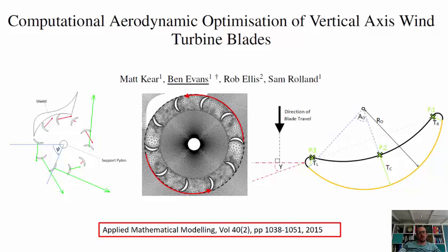Essentially, what we were trying to do in this project was develop a parameterization and optimization scheme for the blade shape of vertical axis wind turbines. The work was published in Applied Mathematical Modelling back in 2015.